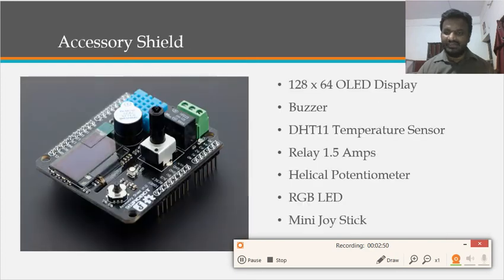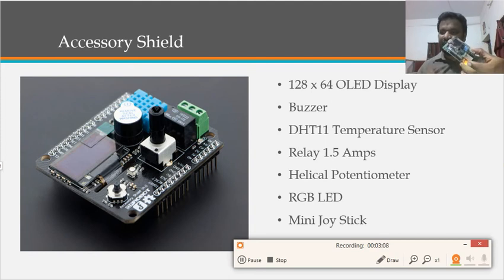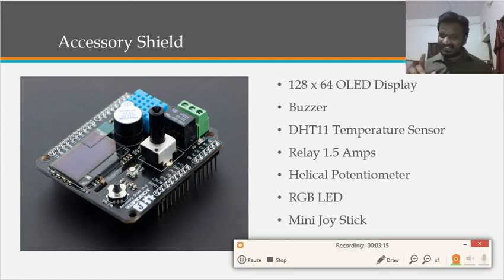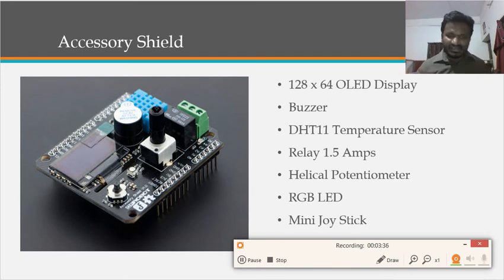I have a device called an accessory shield which contains multiple peripherals. I just plugged it on top of the U2 Neo board. It contains an OLED display, a buzzer, a potentiometer, a temperature sensor, a relay, an RGB LED, and a mini joystick. We will check some of these peripherals using GPIO.